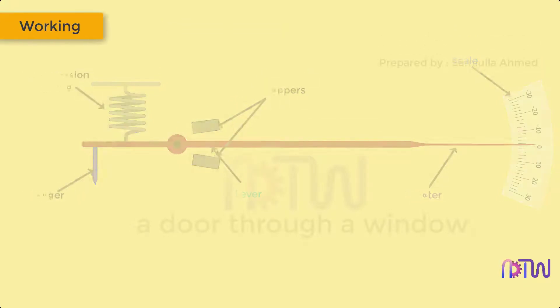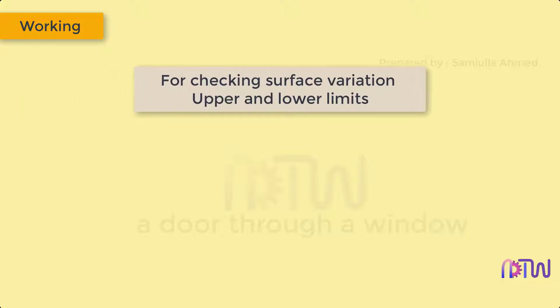The lever type comparator can be used in two ways. First, checking the surface variation of the part from the required dimension, that is to check the upper and lower limits of the given part. Second, to compare the given component with an actual standard component.